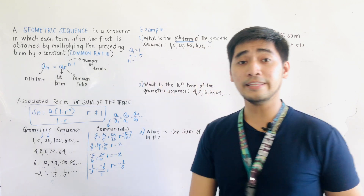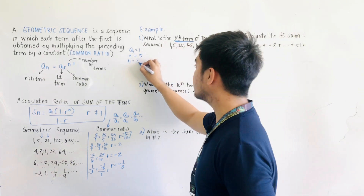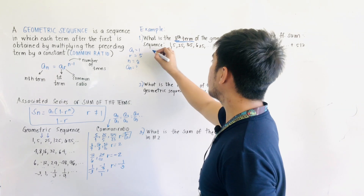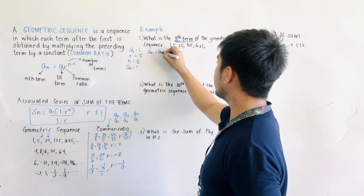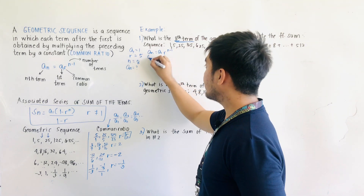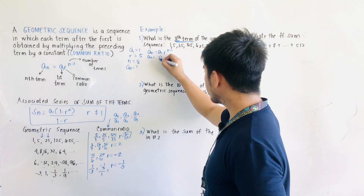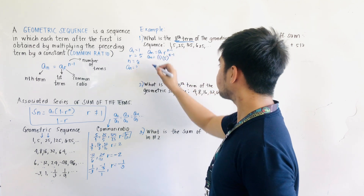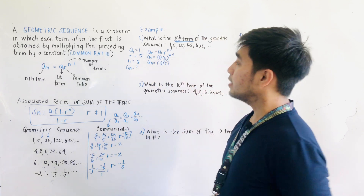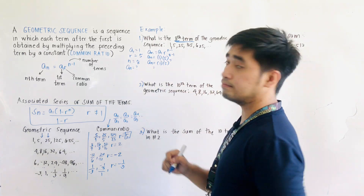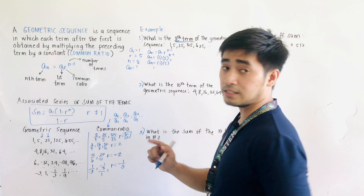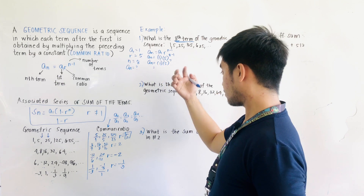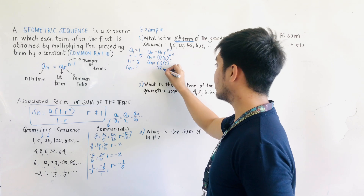We are asked to find AN. Writing the formula: AN is equal to A1 times R raised to N minus 1. Substituting: AN equals 1 times 5 raised to 8 minus 1, which is 5 raised to 7. Since 1 times 5 raised to 7, and 5 multiplied by itself 7 times, equals 78,125. Therefore, A8 equals 78,125.